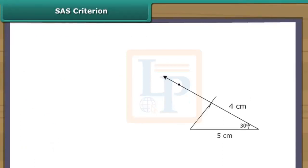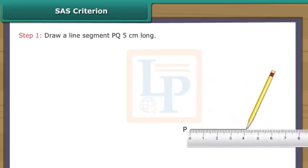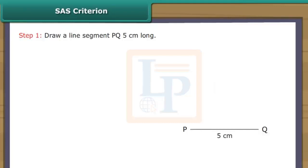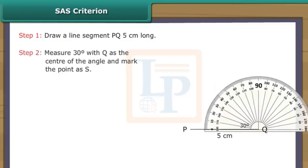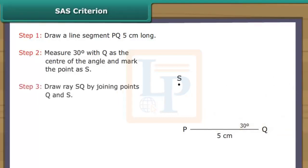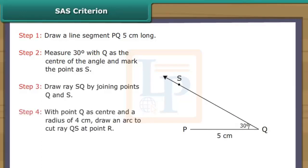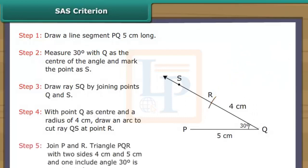SAS criterion: Let us draw a triangle whose two sides measure 4 cm and 5 cm and the included angle measures 30 degrees. Draw a line segment PQ 5 cm long. Measure 30 degrees with Q as the center of the angle and mark the point as S. Draw ray QS by joining points Q and S. With point Q as center and a radius of 4 cm, draw an arc to cut ray QS at point R. Join P and R. Triangle PQR with two sides 4 cm and 5 cm and one included angle of 30 degrees is constructed.